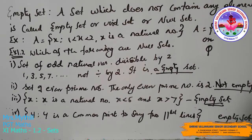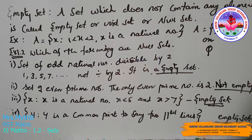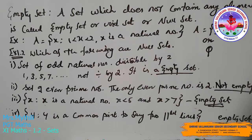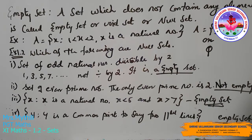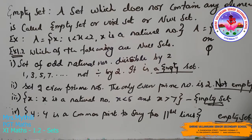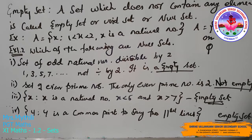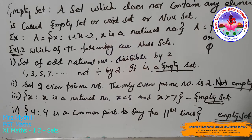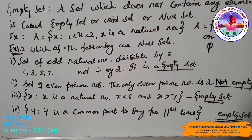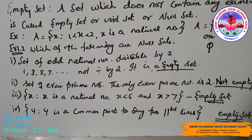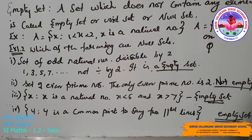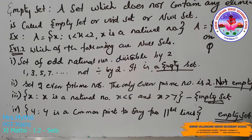Welcome children. In this video we are going to study about empty set, finite and infinite set, and equal sets. First, empty set: a set which does not contain any element is called an empty set. It is also said to be a void set or null set, and it is denoted by braces with no element inside.